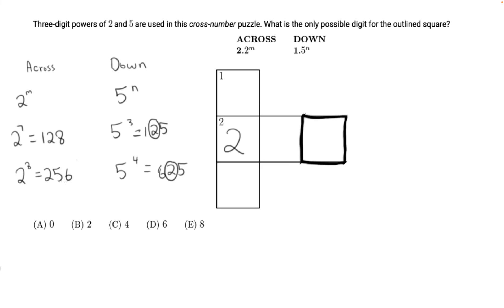For the across, the number that starts with a 2 is 256, so we can fill that in. What is the only possible digit for the outline square? That's 6.